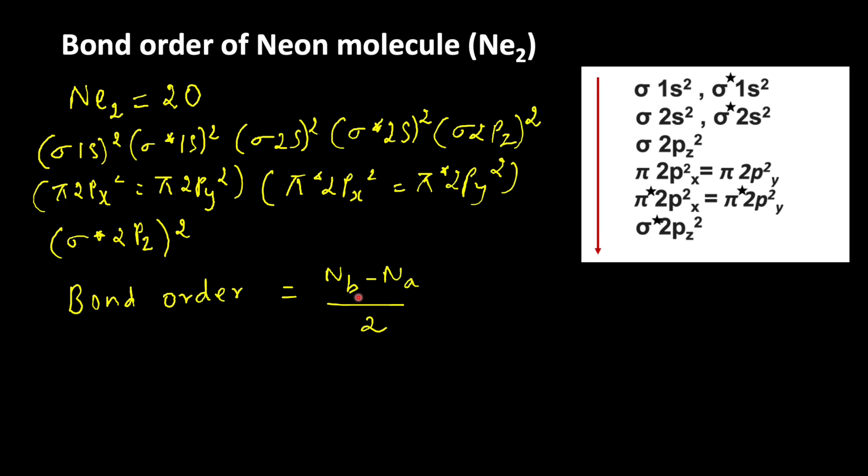Let us count the bonding electrons. Sigma 1s2, so 2. Sigma 2s2, 2 plus 2 is 4, then here 6, 8, 10. Total 10 bonding electrons are present.